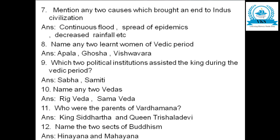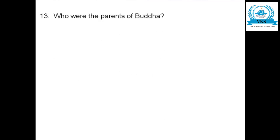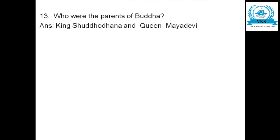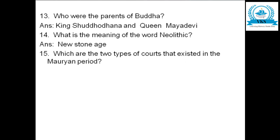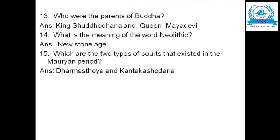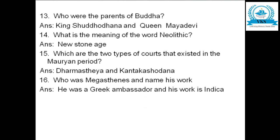Name the two sects of Buddhism — Hinayana and Mahayana. Who were the parents of Buddha? King Suddhodana and Queen Maya Devi. What is the meaning of the word Neolithic? New Stone Age. Which are the two types of codes that existed in the Mauryan period? Dharmasthea and Kantakachodana.